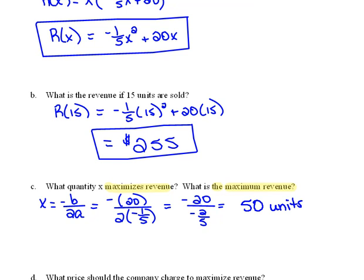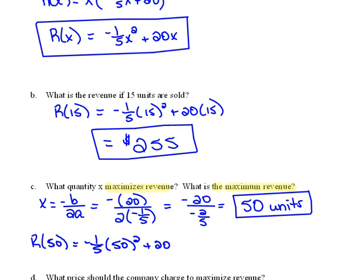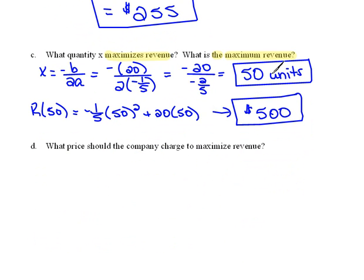Again, if you need to pause to make sure that you can get that on your calculator, go right ahead. Now to find the maximum revenue, we're just going to evaluate our revenue function for 50 items. So that would be negative 1 fifth times 50 squared plus 20 times 50. And we should end up, if we type this in correctly, we should end up with $500. So we'll have a maximum revenue situation here. If we sell 50 units, we'll make $500. That's our maximum revenue.